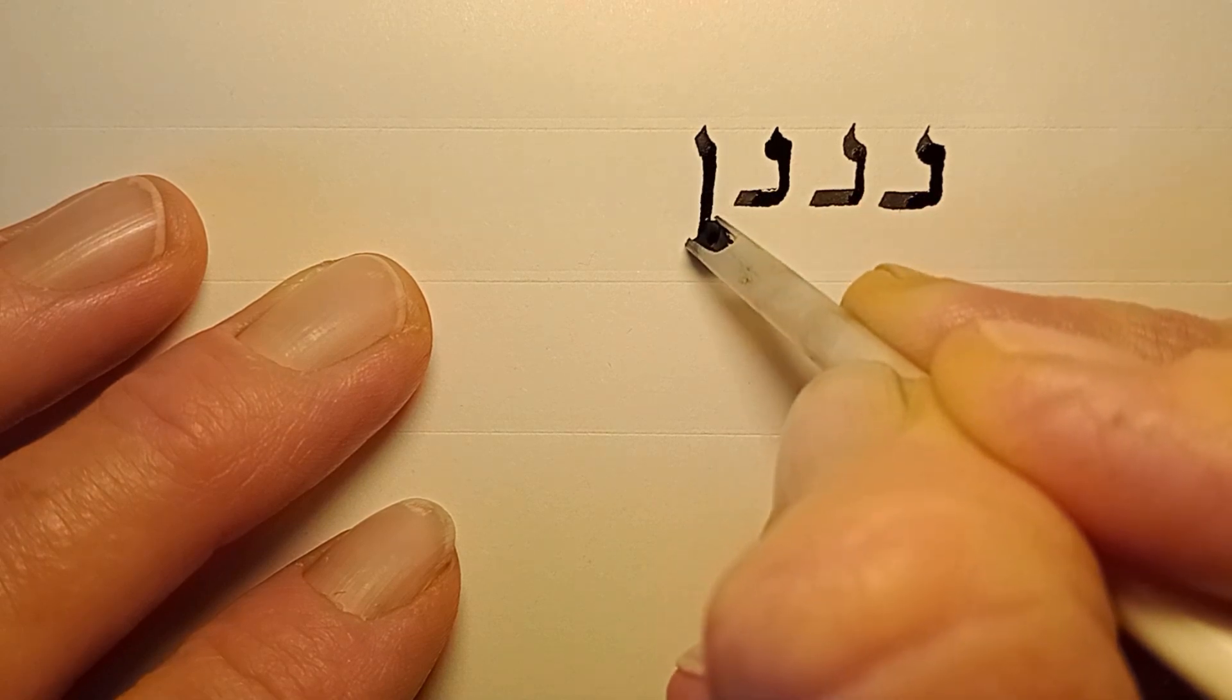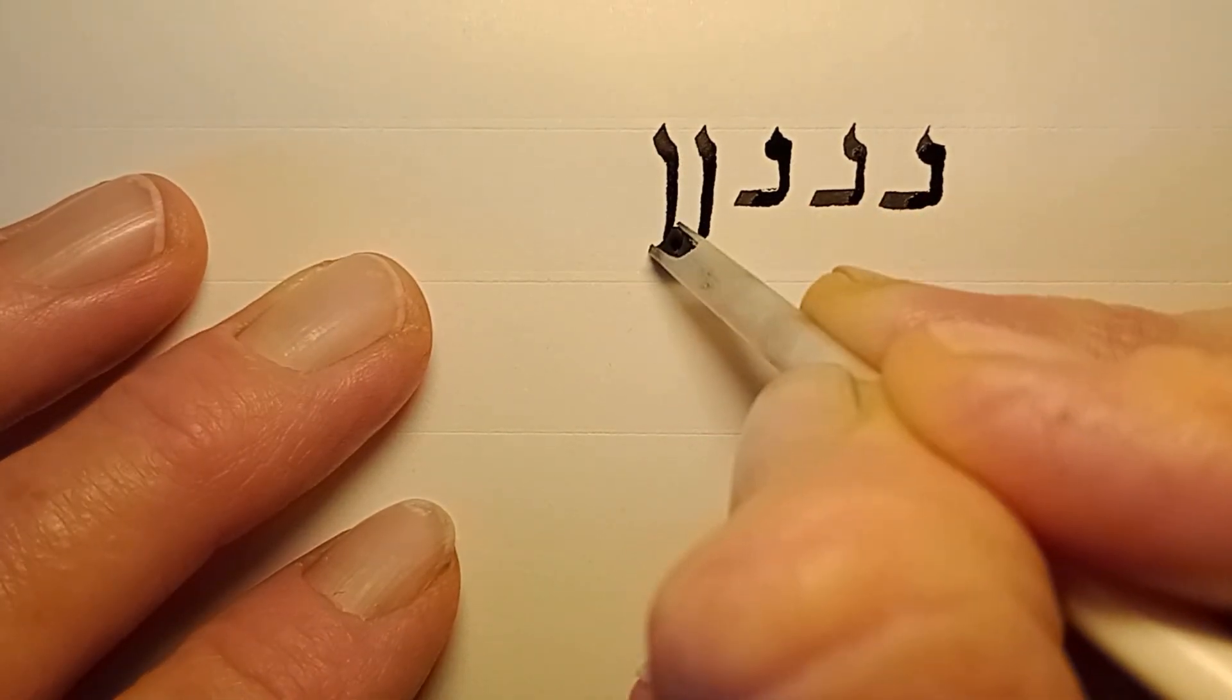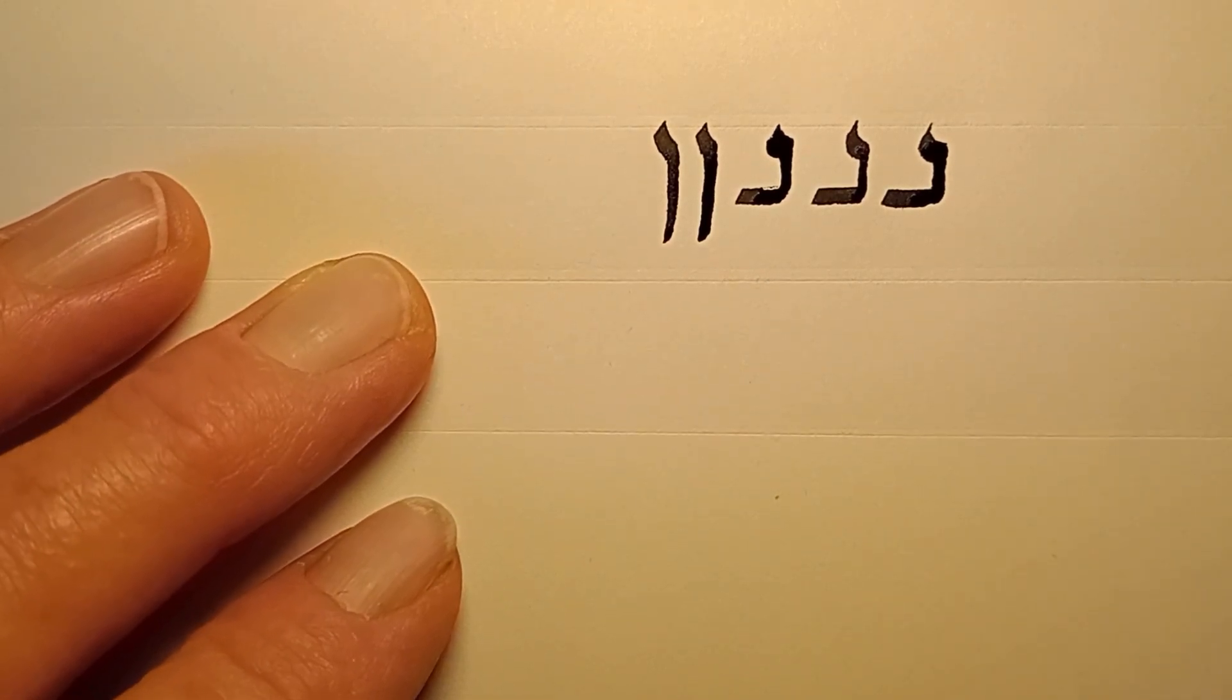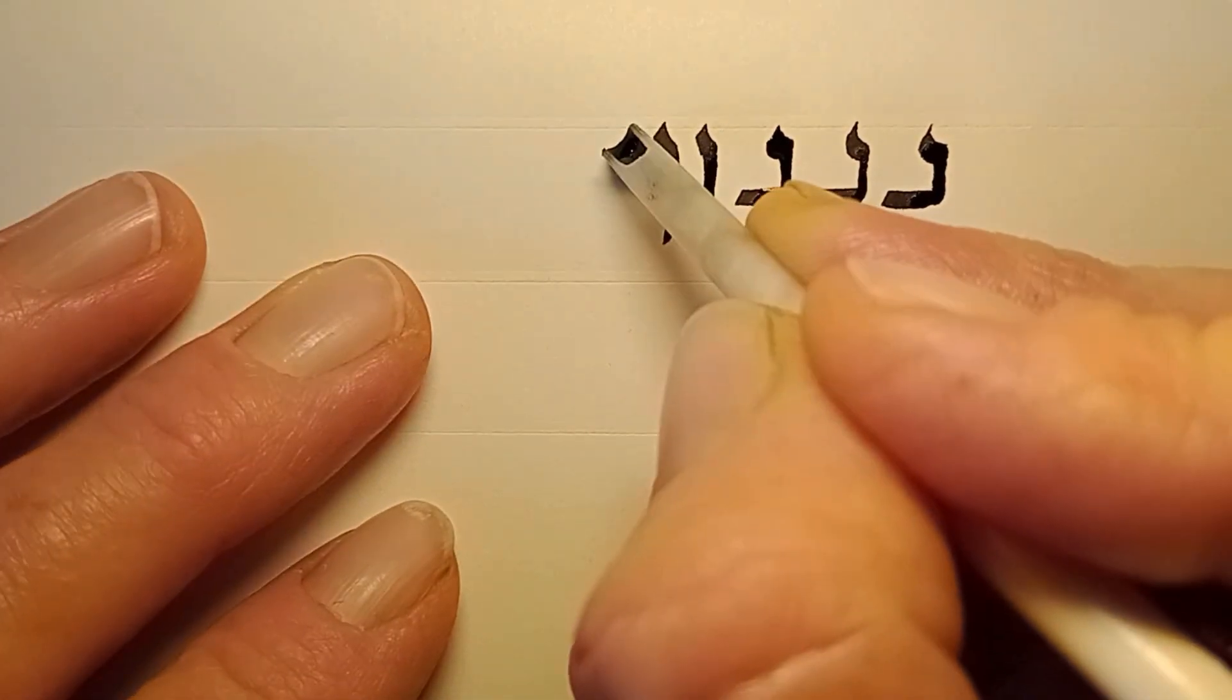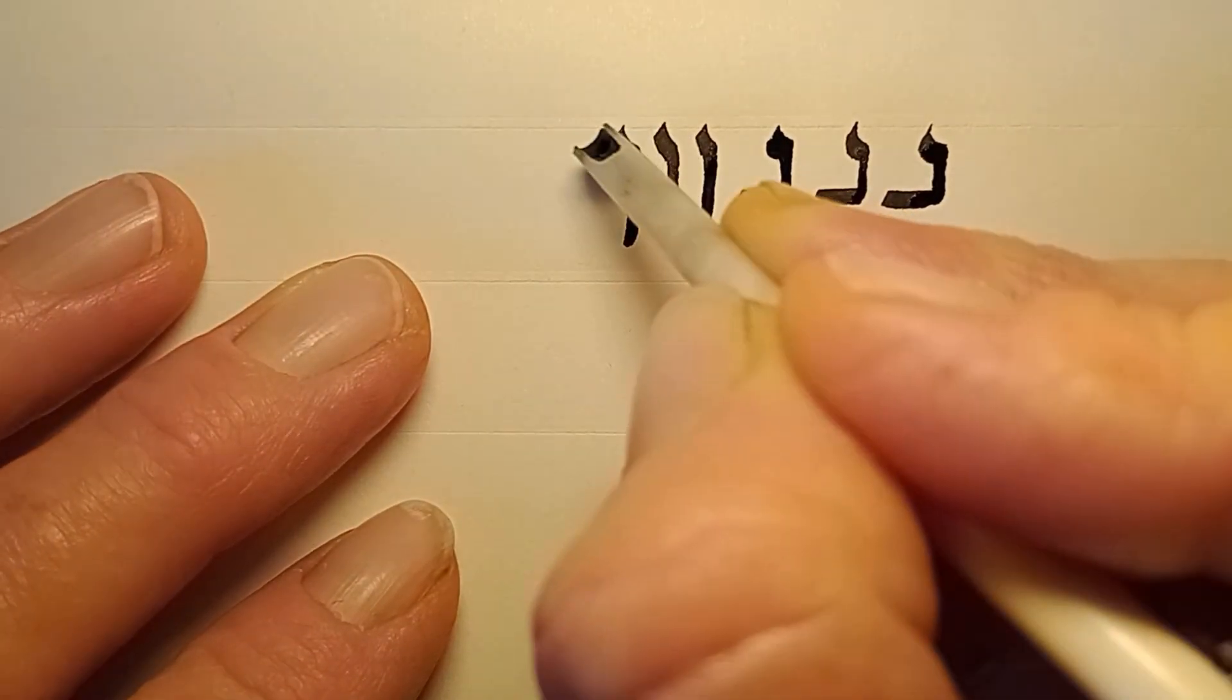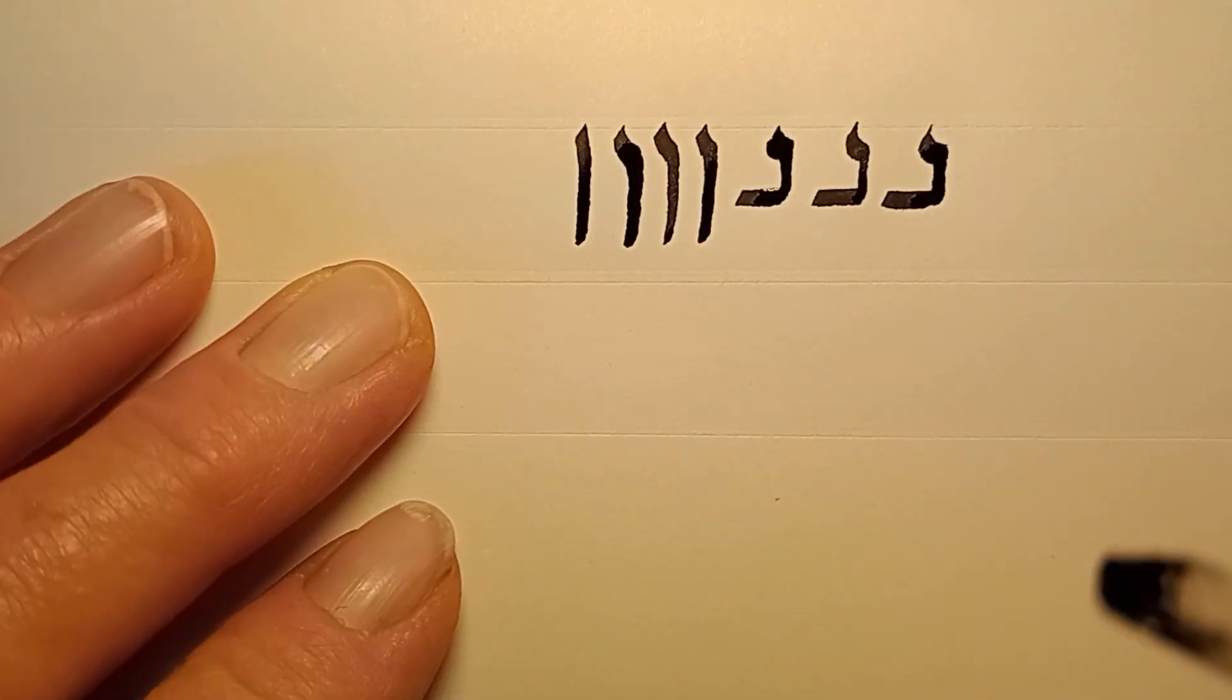Nun sofit is the final form of the letter. Excuse me while I grab some more ink from my quill. Nun sofit. It can also be written just as a straight line. You don't have to put that little crook at the top if you don't feel like it.